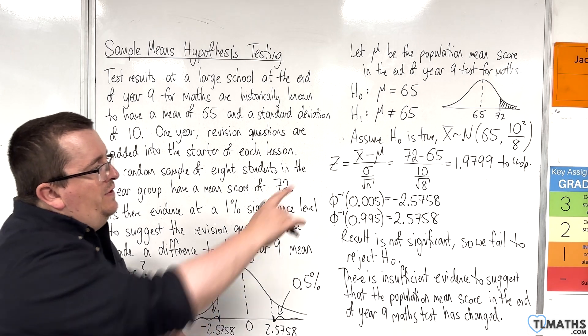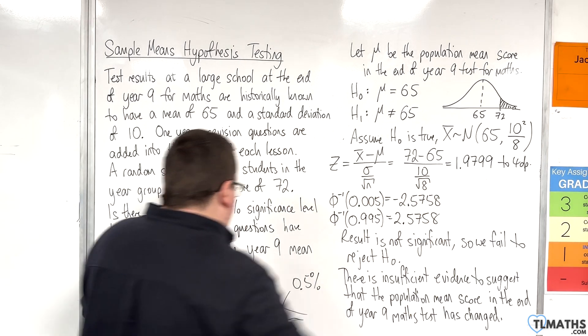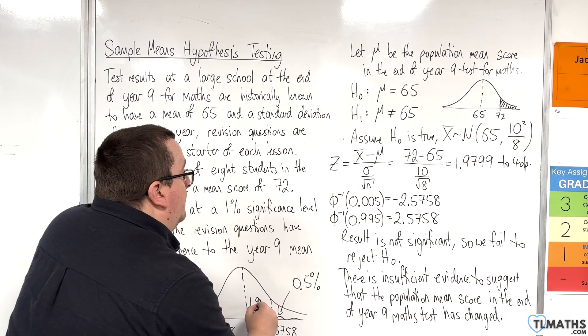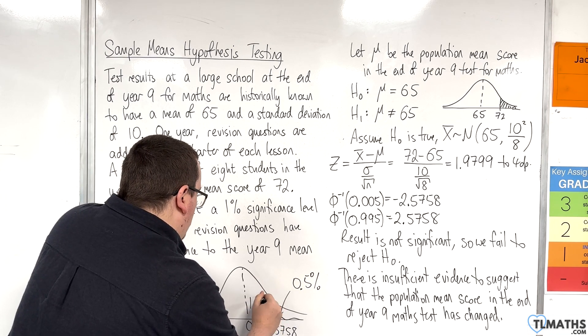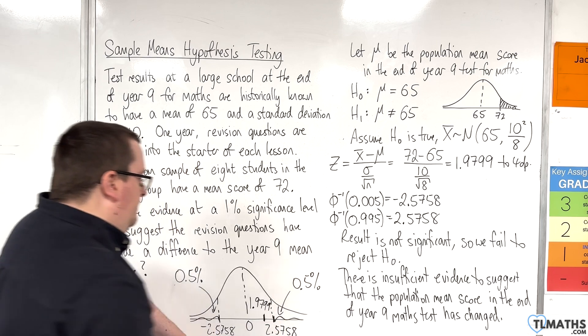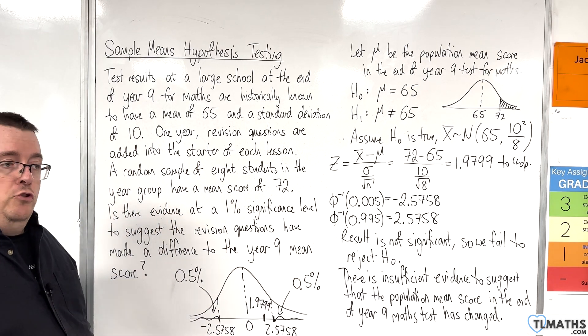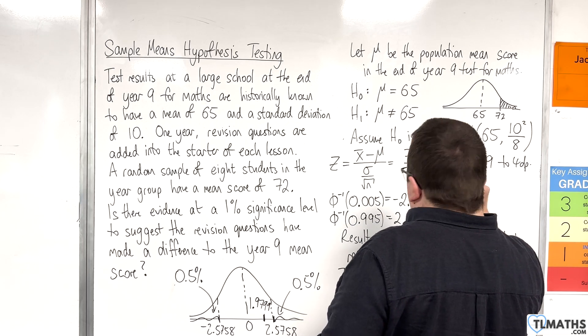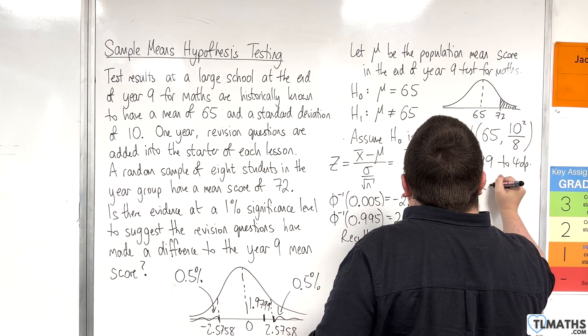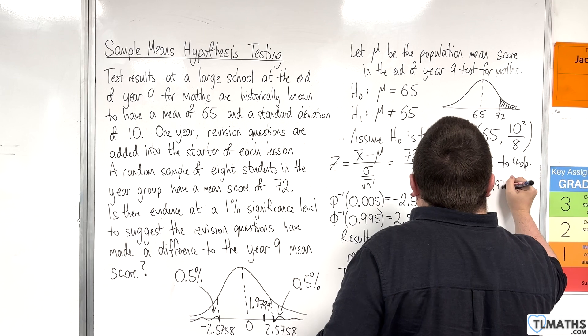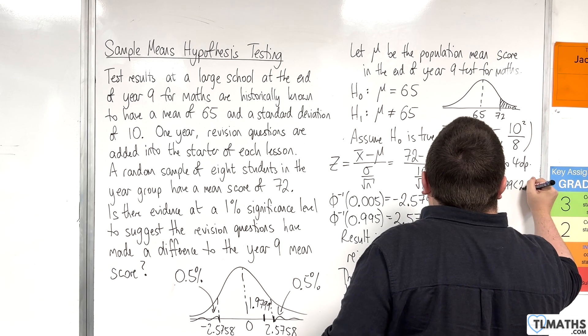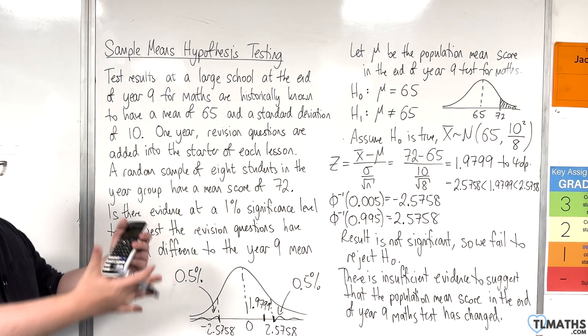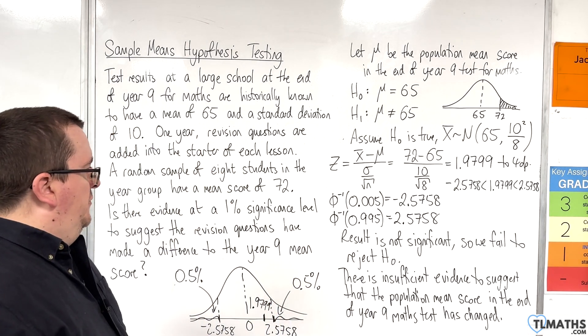The 1.9799 that I got there for the test statistic is here. Clearly, it's not in the critical region. Minus 2.5758 is less than 1.9799, which is less than 2.5758. It's within this bit.